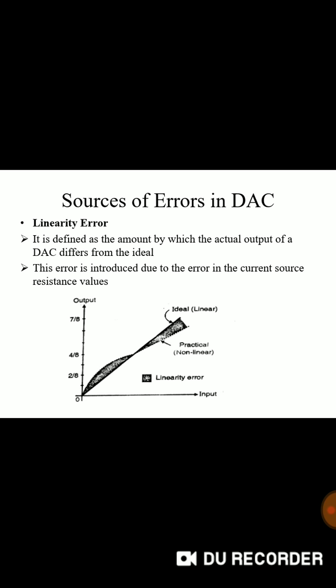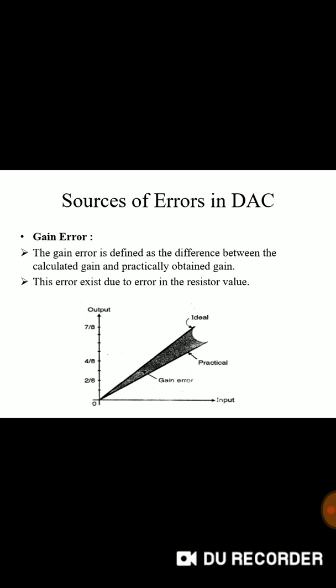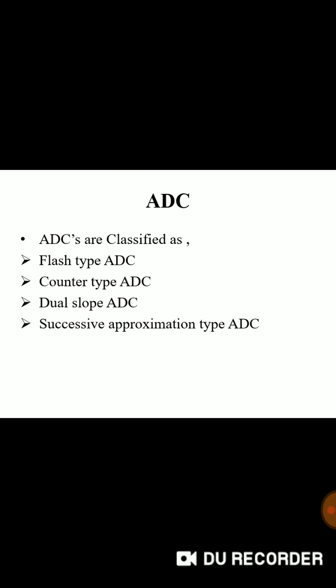Linearity is nothing but the amount by which actual output of DAC is differing from the ideal value. Offset error is nothing but if all inputs are 0 analog output is also expected to be 0 but practically it does not happen. Some non-zero analog voltage exists. So this is offset error. Gain error is defined as difference between calculated gain and practically obtained gain value. Due to value register value error this error may exist.